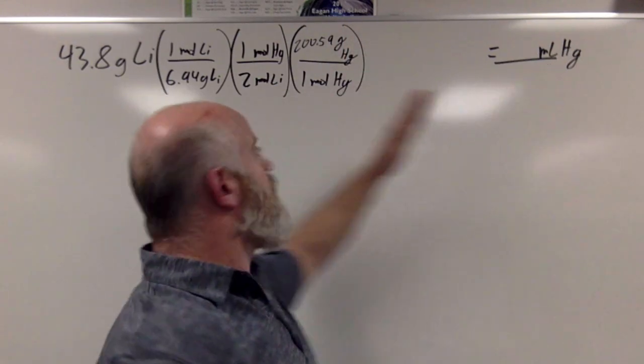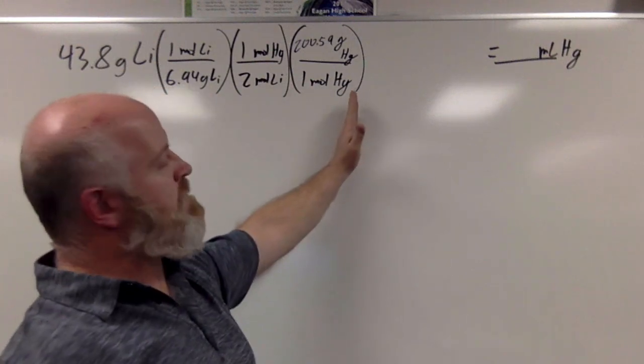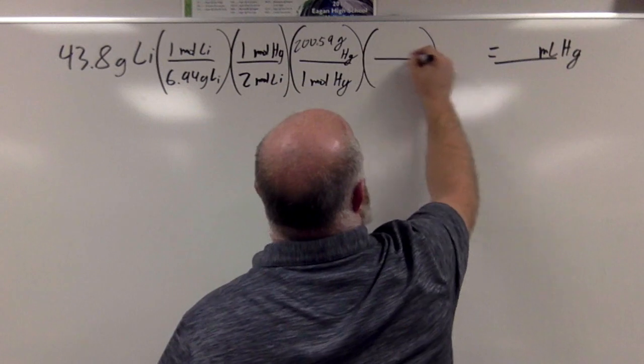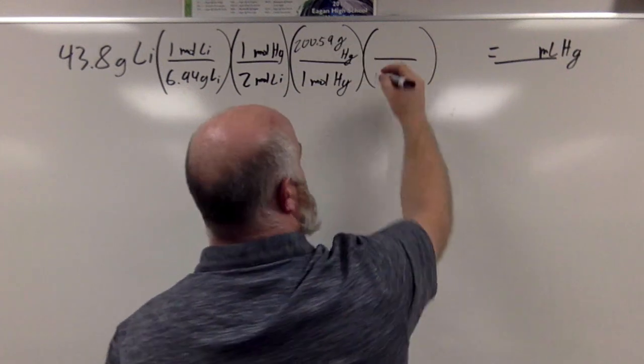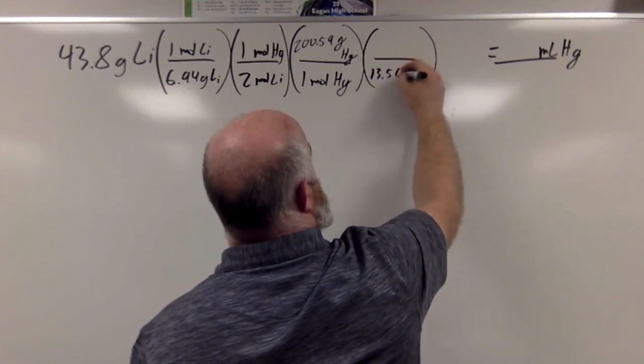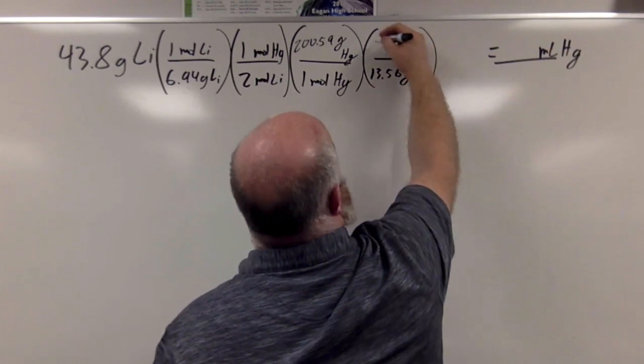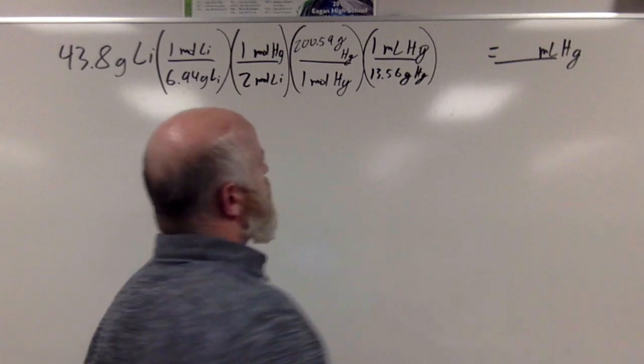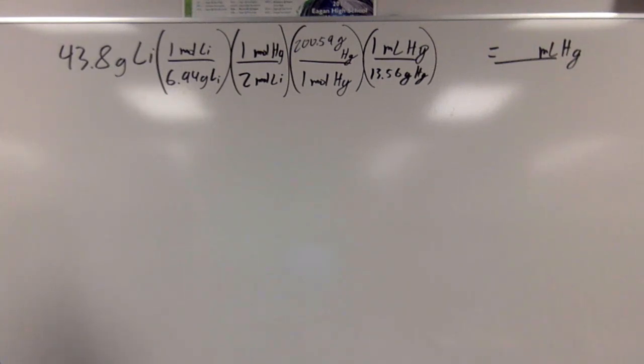But I want milliliters. Here's where we would have stopped in the past, but I've got to go one more step. So now adding the step in, we know the density of mercury is 13.56 grams of mercury for every 1 milliliter of mercury. Take a look at our work here.